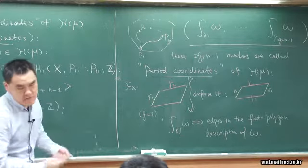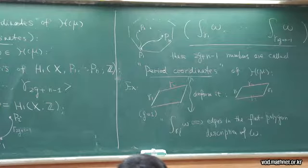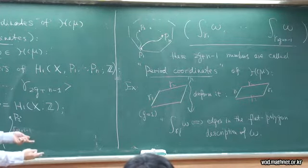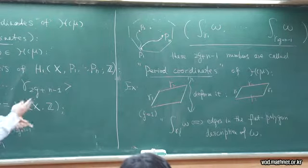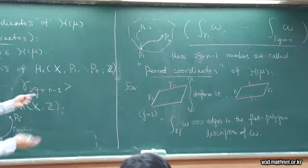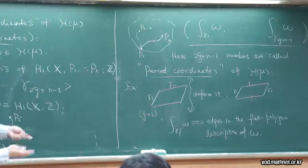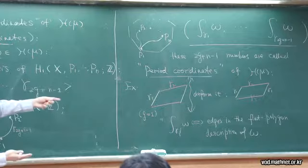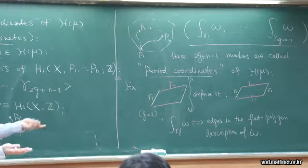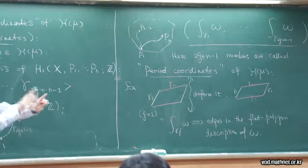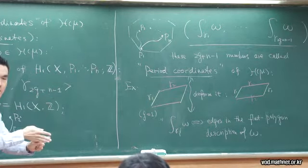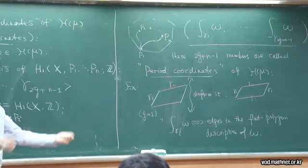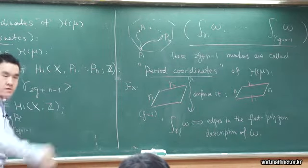This also partially answers a question. At least one way to cut your surface and decompose it is along these 2g+n−1 basis paths and integrate omega. These values give you edges of polygons in the Euclidean plane that you have to identify, because you cut the surface and it becomes two sides along this cutting, so you have to identify them as one pair of parallel vectors in the Euclidean plane.